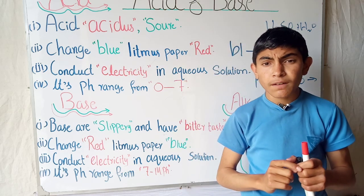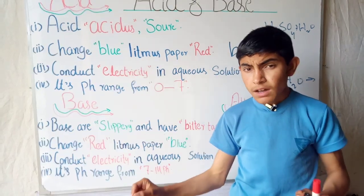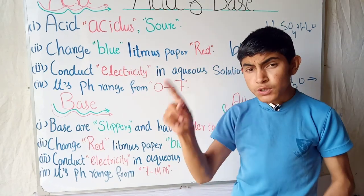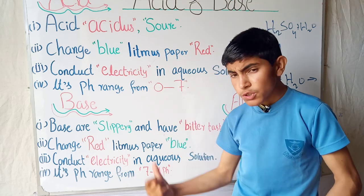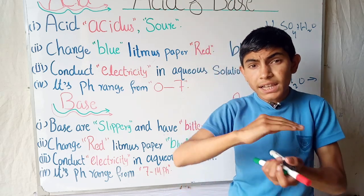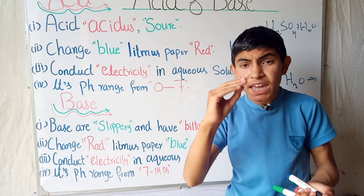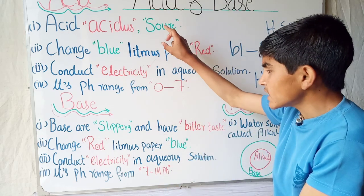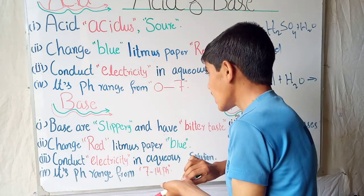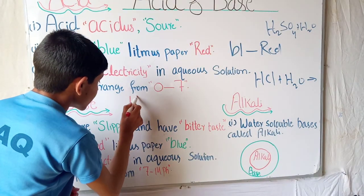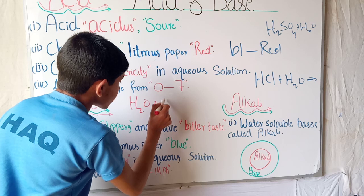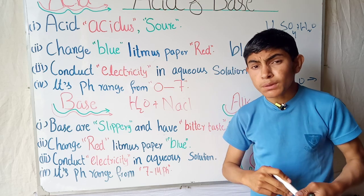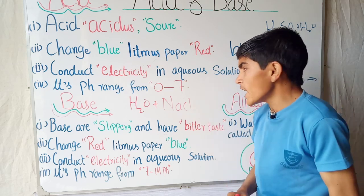If we are arranging base on the pH scale, the range is from 7 to 14. The 0 to 7 is acid, from 7 to 14 is base, while the medium, 7, is neutral. The neutral are water, H2O, and also NaCl.